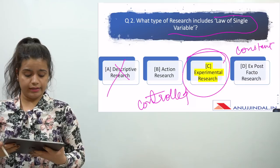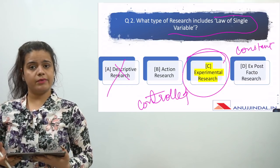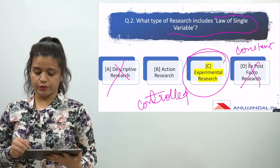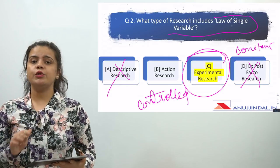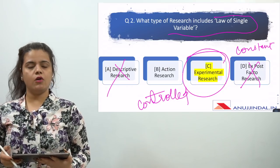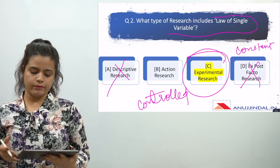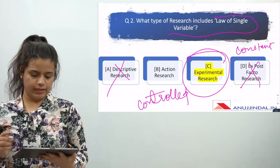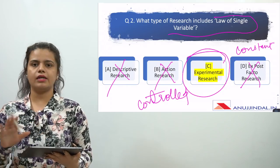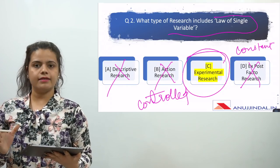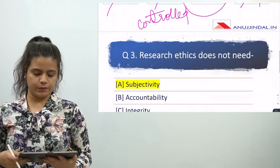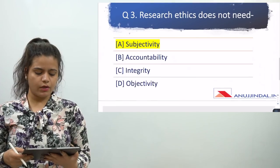In descriptive research and in ex-post facto research, you cannot control the variable, so they cannot follow the law of single variable. In action research also it cannot apply. So the clear-cut answer is experimental research.